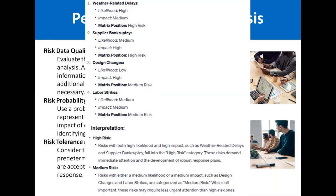A probability and impact matrix is used to visually represent the relationship between the likelihood and impact of each risk. This matrix helps in easily identifying and prioritizing risks. You can think of this matrix as a simple spreadsheet in which the risks are listed along with their probability of occurrence and their impact on the project.